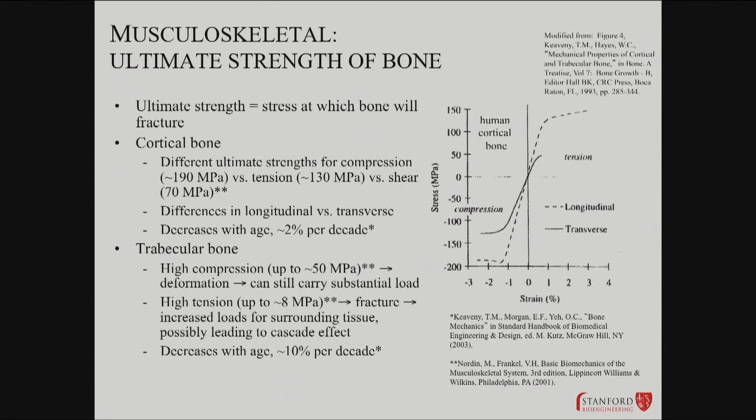Ultimate strength tends to decrease with age, so this is quantifiable. You have about a 2% drop per decade in your ultimate strength, making you more susceptible to fractures. The properties are a little different with trabecular bone, but you've got a faster drop-off with age for trabecular bone.